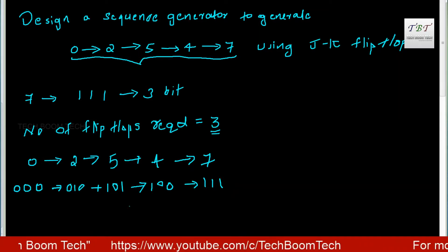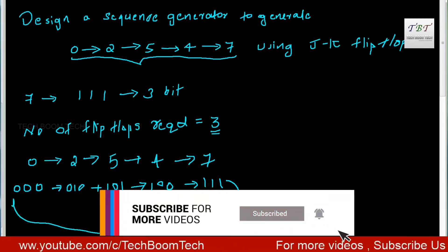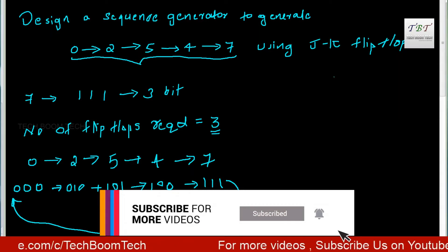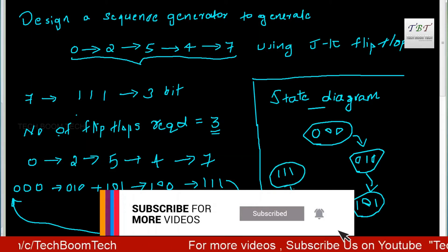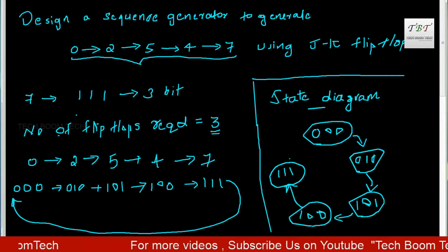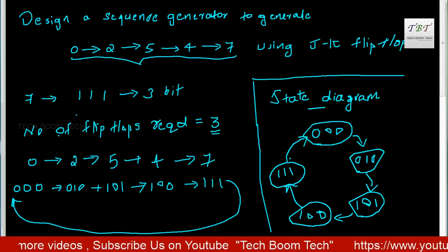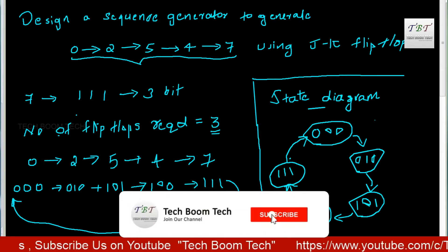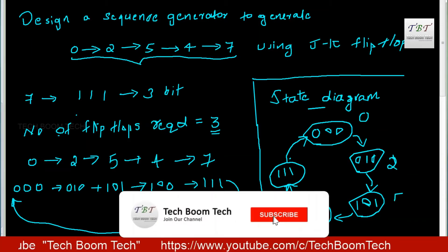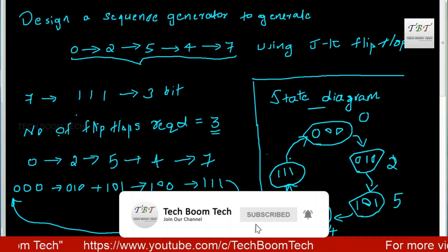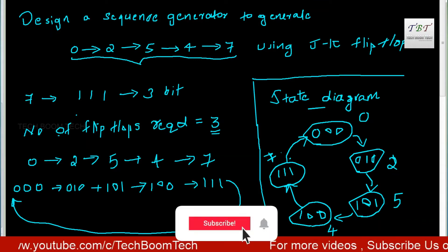We will now write the state diagram. The counting sequence we need to generate is: 0, 2, 5, 4, 7. This completes the identification of our sequence for the next step.